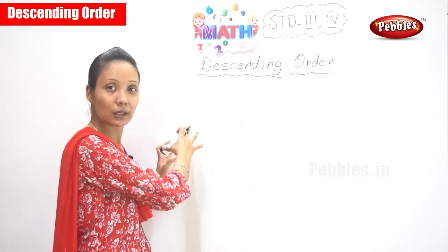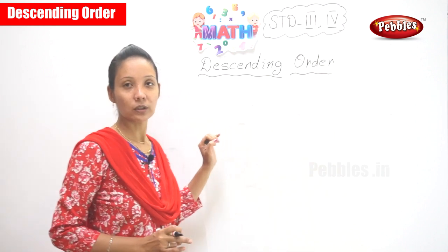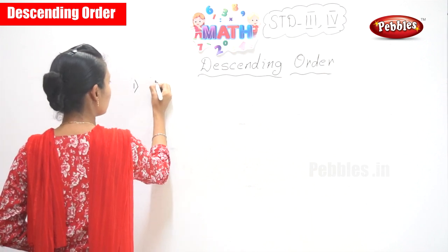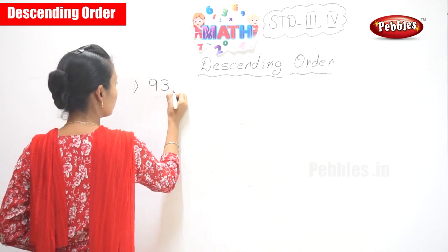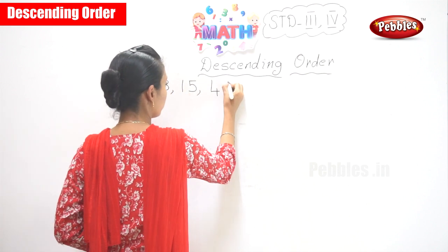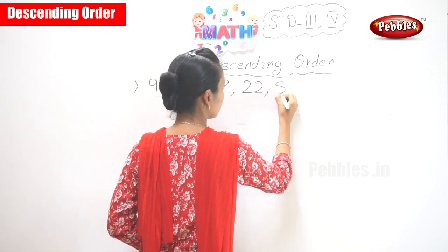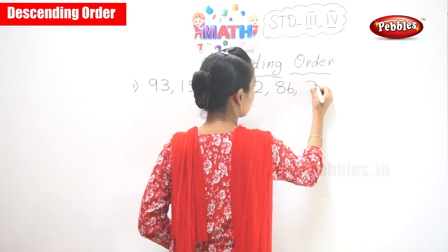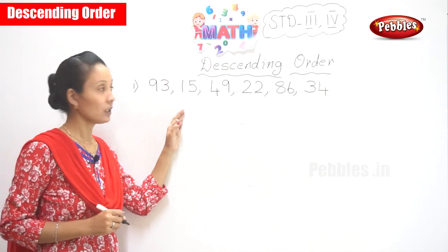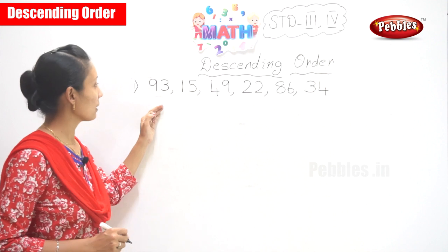Okay, so you are going to learn descending order. Once more I tell you, descending order is from the greater number — that is the bigger number — to the smaller number. The first set of numbers is: 93, 15, 49, 22, 86, and 34.